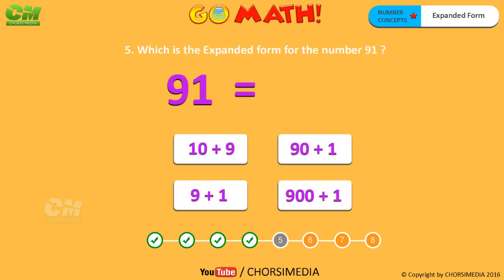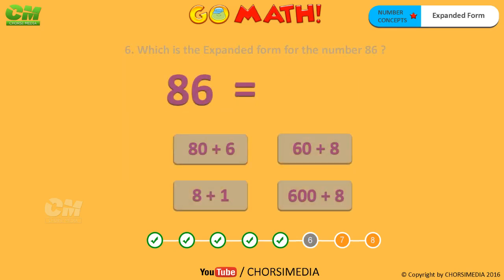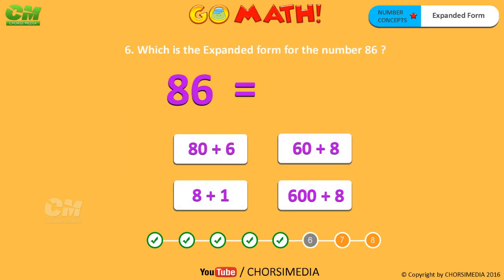Which is the expanded form for the number 91? The digit 9 is in the tens place, so the value of 9 is 90. The digit 1 is in the ones place, so the value of 1 is 1. Together, the expanded form for the number 91 is 90 plus 1. You are right, the correct answer is 90 plus 1.